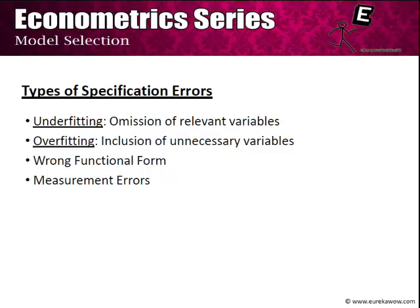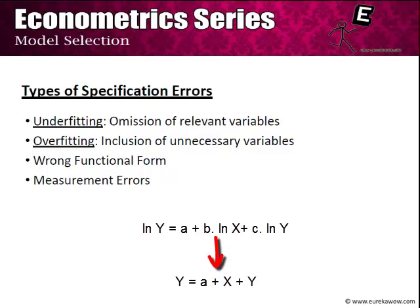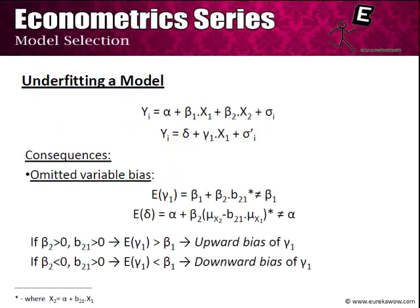Thirdly, it is very important to take the correct functional form of the model. For example, if it is a log-linear model in reality whereas we actually run a linear model, then we would be committing this kind of specification error. This is dealt with more in the module on functional forms. The fourth and most obvious kind of specification error is measurement error, which we will not deal with explicitly in this module.